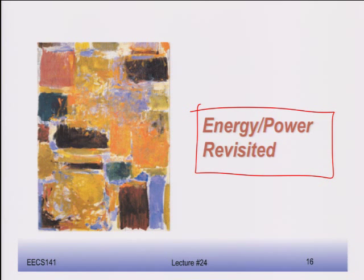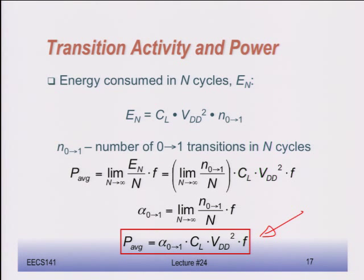Now let's talk about energy and power — a really important topic. For a cell phone, your battery determines what you can do. If you want more functionality without recharging in the middle of the day, you need better energy efficiency, even as people demand more performance. Two things to consider: dynamic power and static power. The dynamic power equation is P_avg = C·L·VDD²·f. There are three factors you can play with: frequency, supply voltage, and switching capacitance.